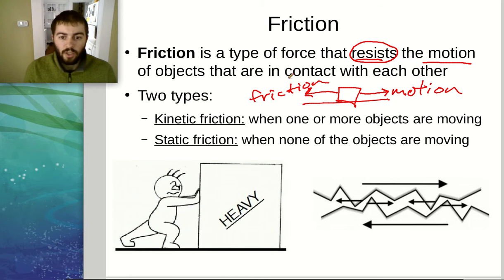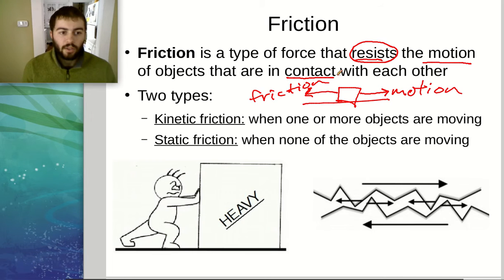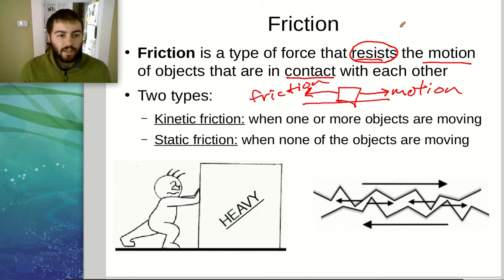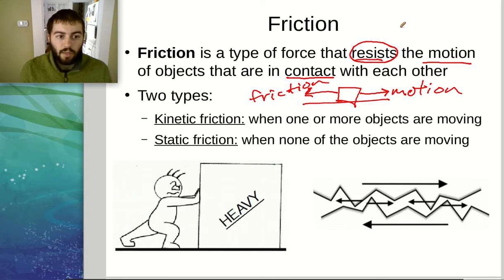Another key with friction is that the objects have to be in contact. There are other types of friction besides objects that are touching each other. One example would be air resistance — if you have an airplane flying through the air, the air resistance pushes against that airplane. Really, the objects rubbing against the plane are just the air molecules in the air. So air resistance is actually a type of friction.